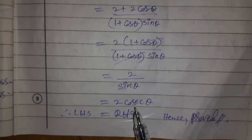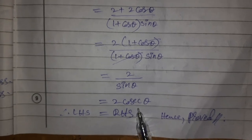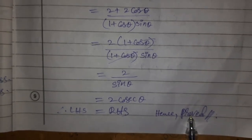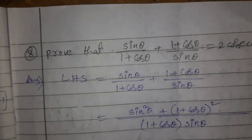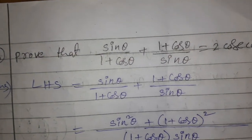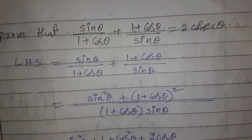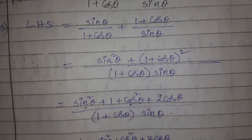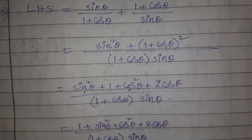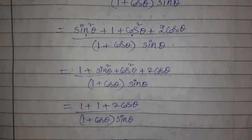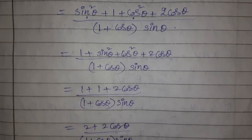The reciprocal of sin is cosec θ. Hence RHS is proved.